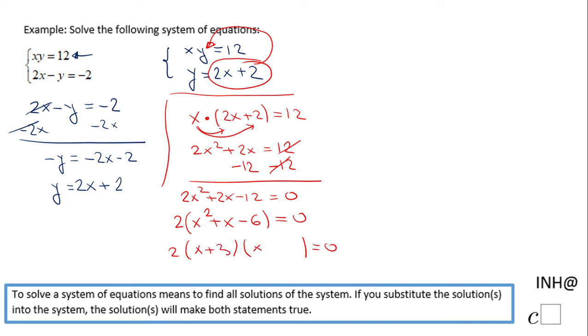So this is the factored form. Now we can use the zero product property. We get x plus 3 equals 0, which gives us x equals negative 3. And x minus 2 equals 0, which gives us x equals 2.